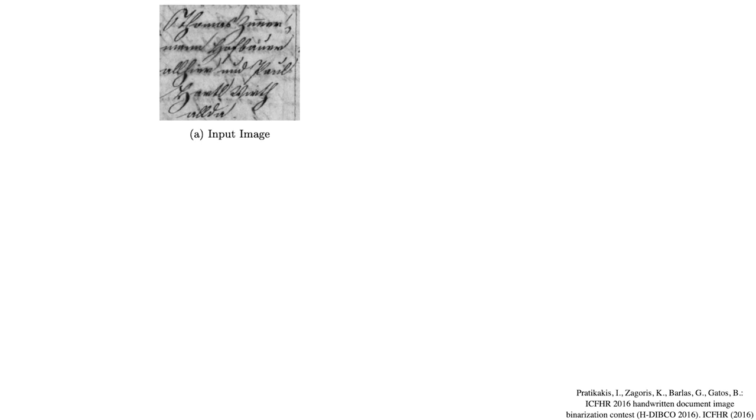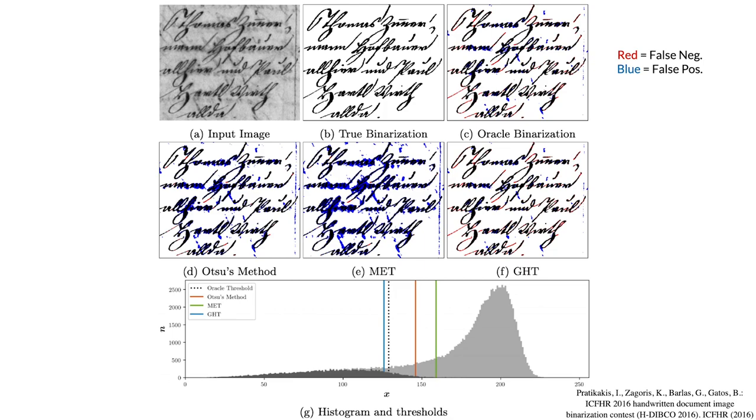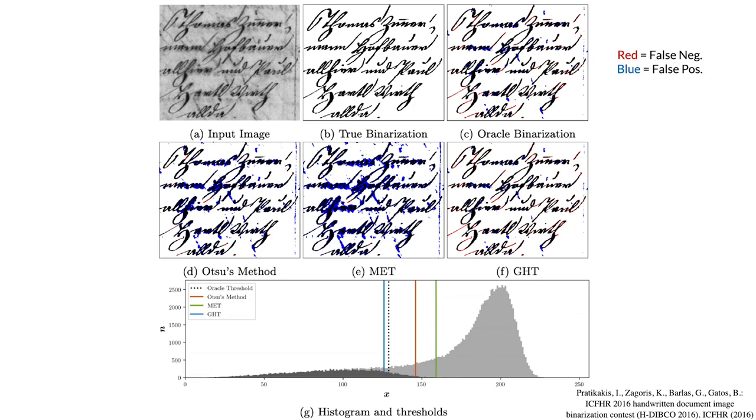So here are some test set images from that benchmark. Here we have an input image, and here's the ground truth binarization. And here is an oracle binarization, which is the best possible binarization you could get if you cheated and looked at the true binarization, but limited yourself to only using a single global threshold for all pixels. I'm visualizing the output of this oracle algorithm by using red pixels for false negatives and blue pixels for false positives. And here's the output of Atsu's method, MET, and GHT. You can see that GHT is doing a significantly better job of separating out the true signal from the background. Here's a visualization of the histogram of the image, where foreground pixels are rendered in a darker color and the cuts of each algorithm are rendered alongside the oracle cut. You can see that the cut location for GHT is much closer to the oracle location than the two baselines.